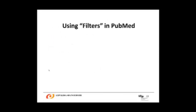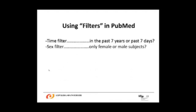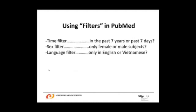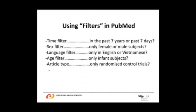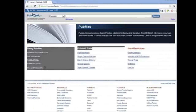Filters are a means by which you can filter or limit your search to specific criteria relevant to your study. For example, you can apply a time filter to look at articles from the past seven years or past seven days. You can use a sex filter for female or male subjects. You can filter by language — English, Vietnamese, French, etc. You can use an age filter to look only at infant subjects, and you can filter by article types, such as randomized controlled trials, or by subjects such as AIDS or cancer.